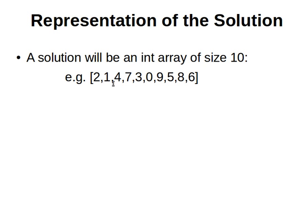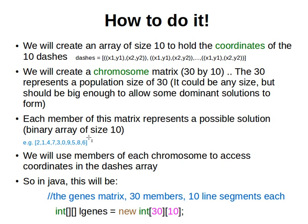To represent the solution, we will just use a simple array of integers, and it's going to be of size 10 because we have 10 dashes. We will use numbers from zero all the way up to nine. Each of these members in this chromosome or in this candidate solution will be one dash.